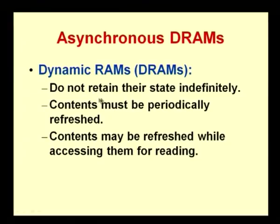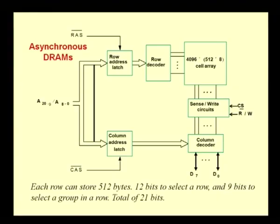Dynamic RAM does not retain the state indefinitely, therefore it has to be refreshed periodically. Each dynamic RAM cell consists of just a simple capacitor and a transistor. Data is stored as a charge on the capacitor. Since the charge is likely to dissipate, we need to keep refreshing the charge periodically — only then will we make sure that the content is retained.